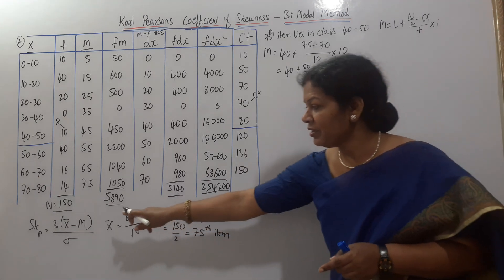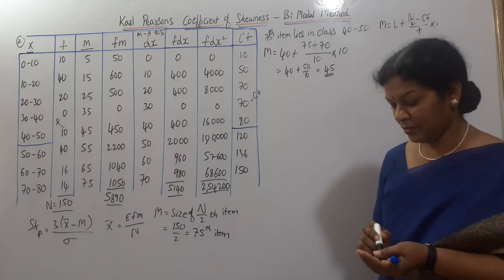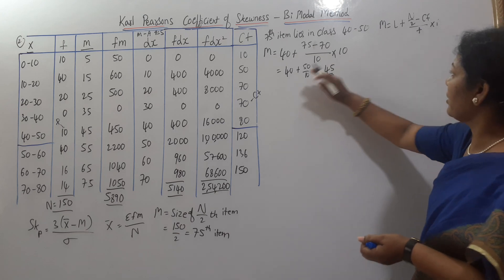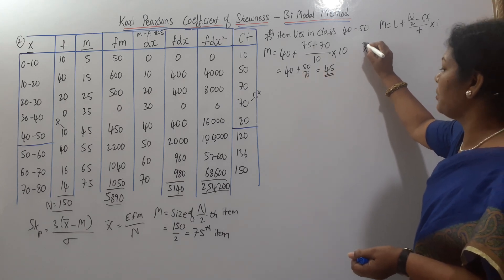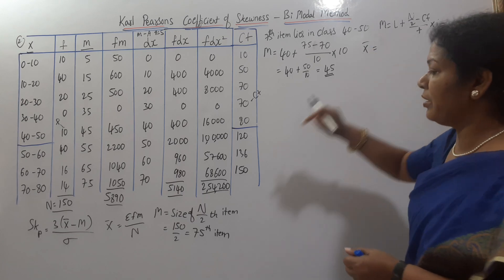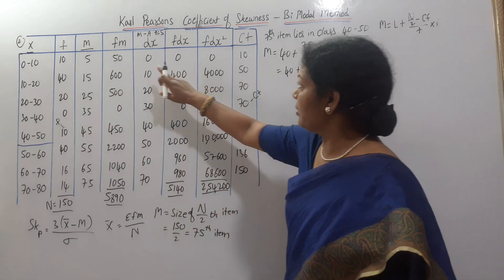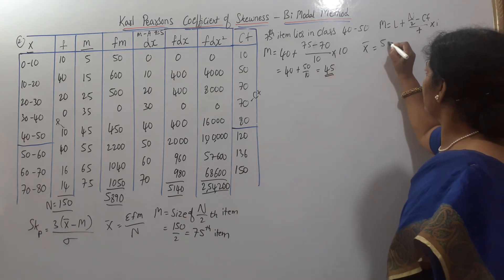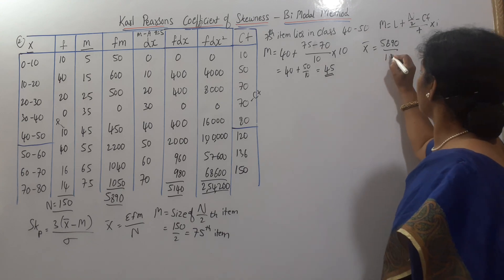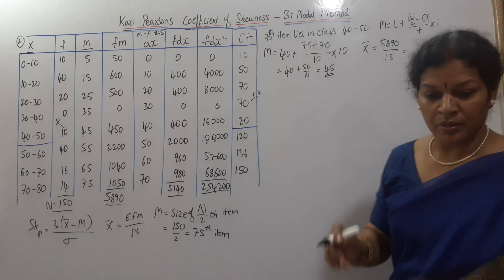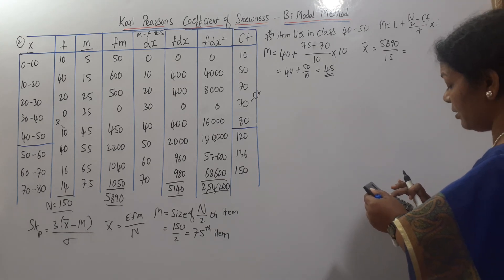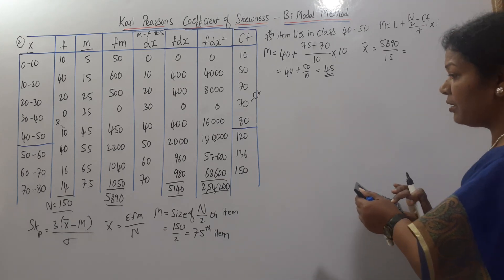Now calculating x̄: x̄ = Σfm / n. The total Σfm = 5890, and n = 150. So x̄ = 5890 / 150 = 39.27.